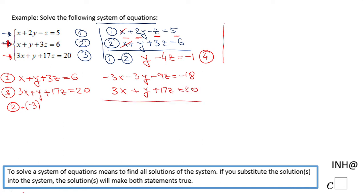Now, as I said, I'm gonna add these two equations. These two guys cancel out—that's the reason we did that multiplication by -3. -3y + y, that is -2y. -9z + 17z, that is 8z. -18 + 20, that is positive 2. So this is equation number five.